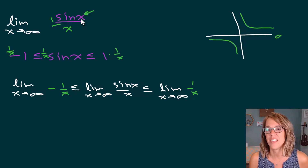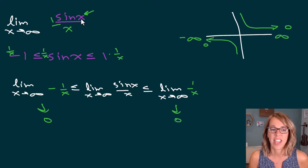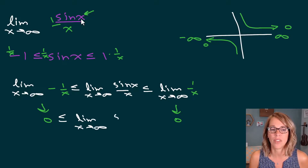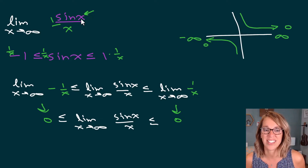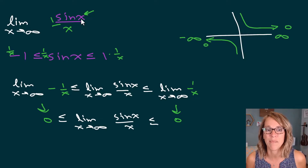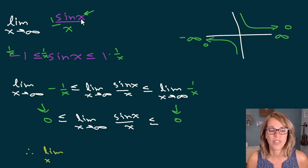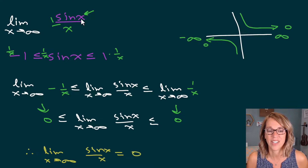If I take a look at what one over x looks like, as I'm approaching positive and negative infinity, both of my values are approaching a y-value of zero. So this turns out to be zero on either end — we're sandwiched in between zero. When you are verifying something with a theorem, you need to show all of the steps. Because the limit is sandwiched between two zeros, it has no choice but to be zero. Therefore, the limit as x approaches infinity of sine x over x is equal to zero.